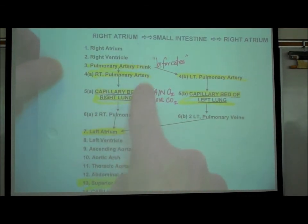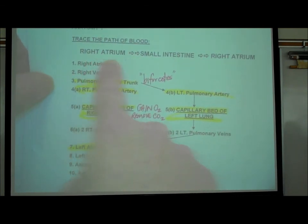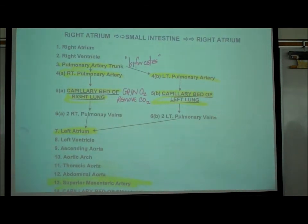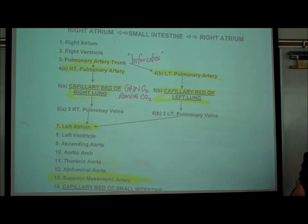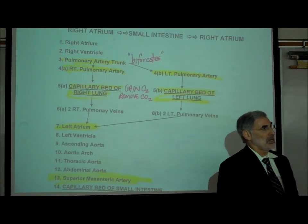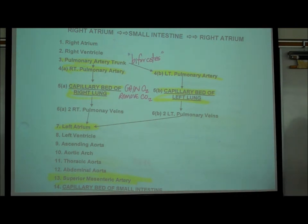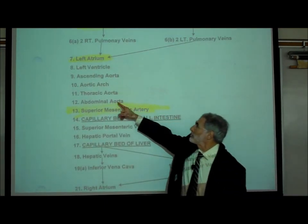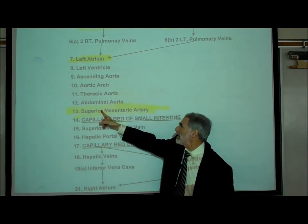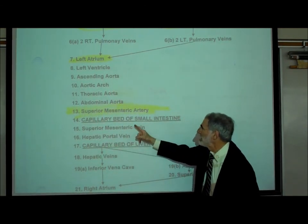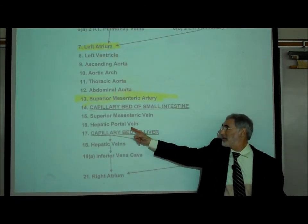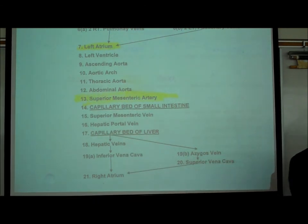We've now described in its entirety how to map quest from the right atrium to the small intestine and back. Much of this is traceable on the cat: aortic arch, thoracic aorta, abdominal aorta, superior mesenteric artery, the small intestine; and on the specially injected cat, the superior mesenteric vein and hepatic portal vein. We're using the cats to help us learn how blood flows through our body.